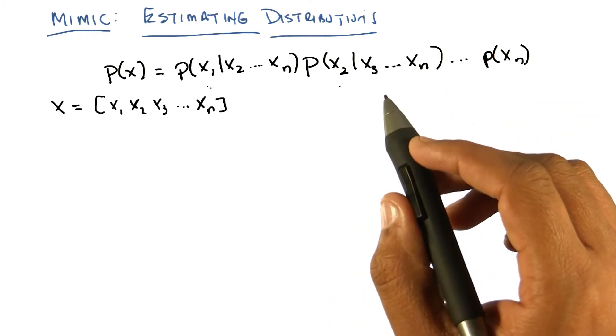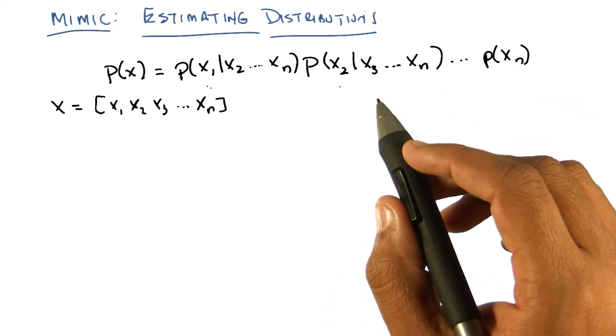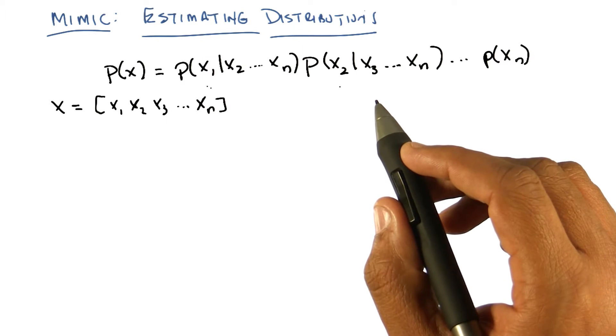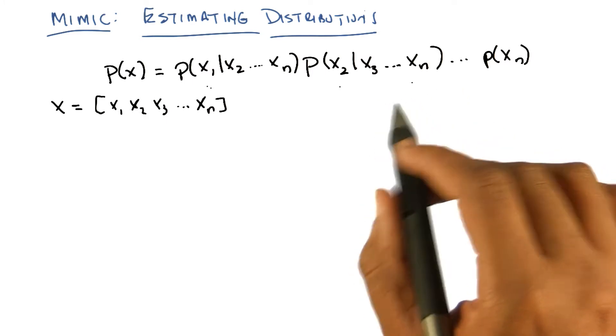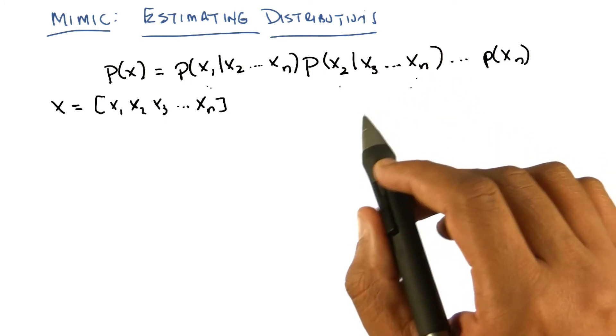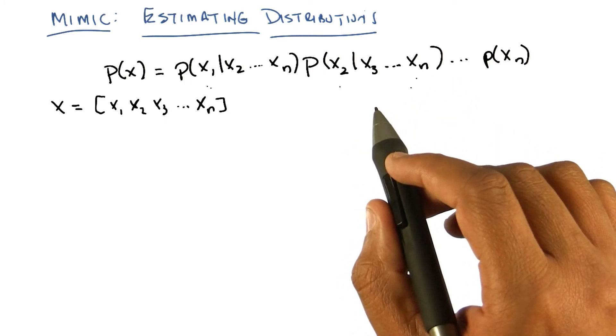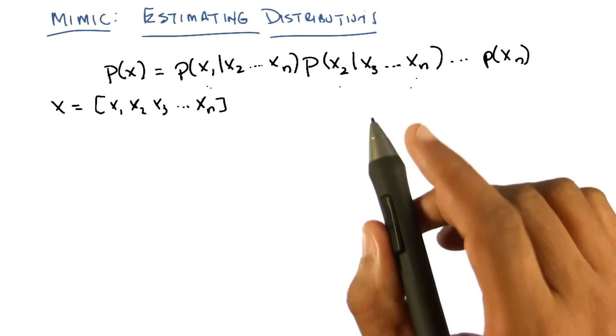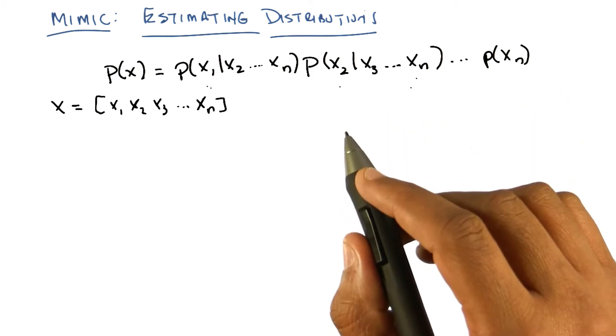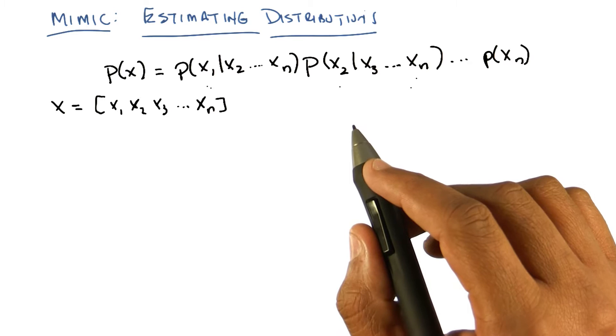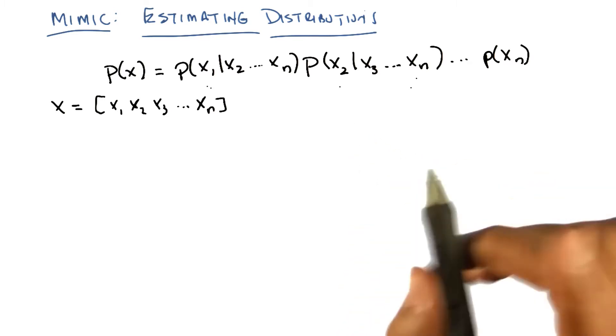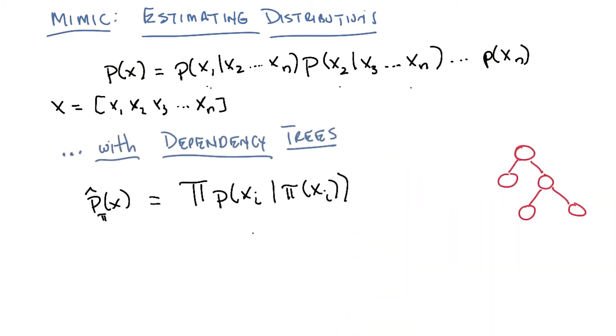But we have addressed this in earlier lectures, earlier lessons, Michael. In the inference lecture, maybe? Yes, in the inference lecture. Where we can try to estimate this incredibly painful joint distribution by making some assumptions about conditional independence. And in particular, I'm going to make one kind of assumption, and that is that we only care about what's called dependency trees. Okay, so what's a dependency tree, Michael? Do you remember?